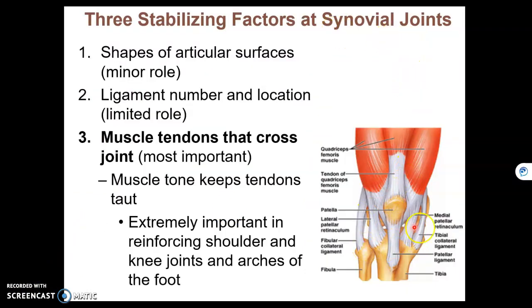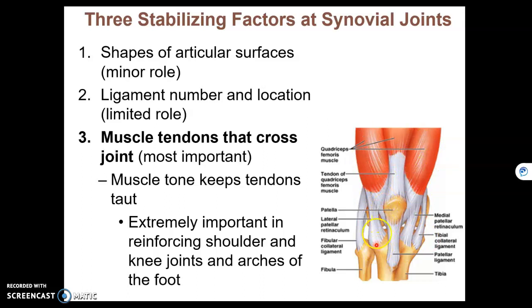Synovial joints are diarthroses, meaning they're freely movable — so what's stabilizing the joint? The shape of the joint surface plays a role, but it's minor. Think of a ball and socket joint: if there was nothing holding the ball in the socket, it would just fall out. Ligaments connect bone to bone and help prevent too much movement, but still play a limited role. The tone of the muscles — partially contracted muscles pulling one bone towards the other — is the most important factor stabilizing joints.